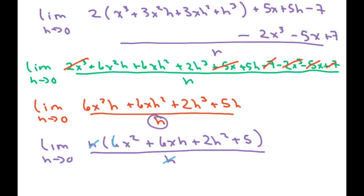Everywhere there's an h, I'm going to put 0. So we have 6x² + 6x times 0 + 2 times 0² + 5. These two cancel out, so you're left with 6x² + 5.